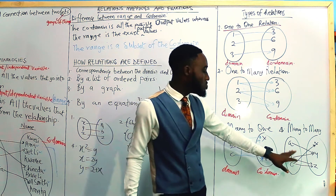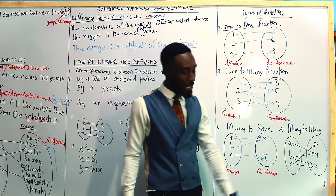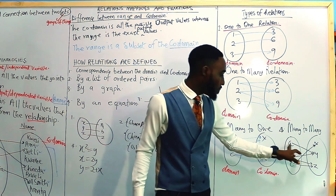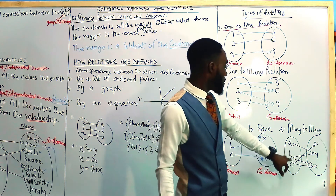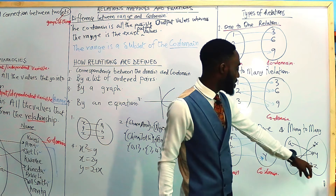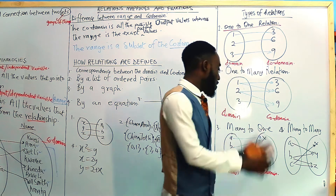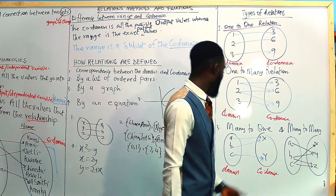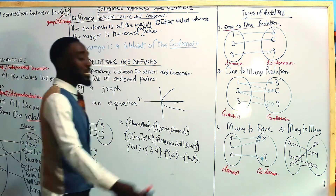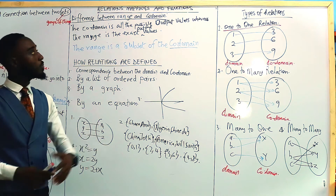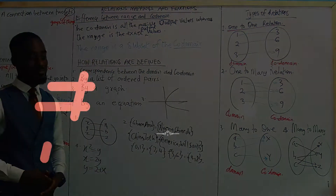The third type is many-to-many relation. Here, many values in the domain map to many values in the co-domain as well. For example, B maps to Y and Z at the same time, and A also maps to Y. So we have many-to-many, many-to-one, one-to-many, and one-to-one relations. This sums up our introduction to the topic on relations, mappings, and functions. See you in the next video. Bye!